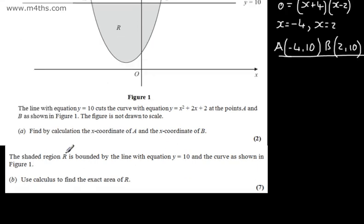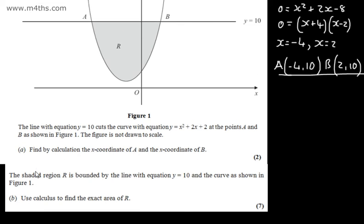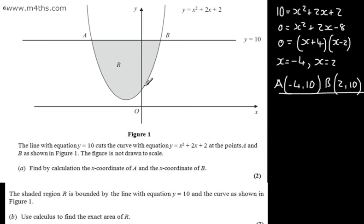We're now told the shaded region R is bounded by the line y equals 10 and the curve as shown in figure 1. In part b for seven marks, we need to use calculus to find the exact area of R. We've got a couple of different choices, and I'm going to draw this up.